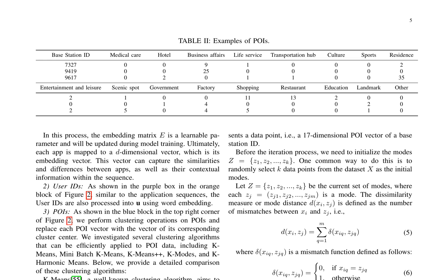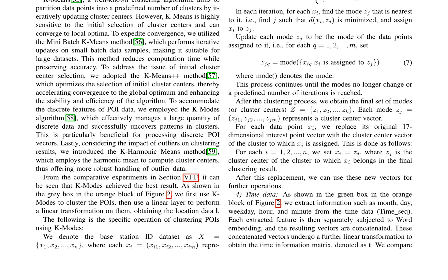The paper discusses the processing of various data types, including application sequences, user IDs, points of interest (POI), and time data. For POI, the authors employ several clustering algorithms, such as k-means, mini-batch k-means, k-means++, k-modes, and k-harmonic means, to group similar POI together, finding that k-modes achieves the best results. The process involves initializing modes, calculating mode distances, updating modes based on assigned data points, and iterating until modes no longer change. After clustering, each POI vector is replaced with its corresponding cluster center vector, preparing the data for further operations such as linear transformations to obtain location data.